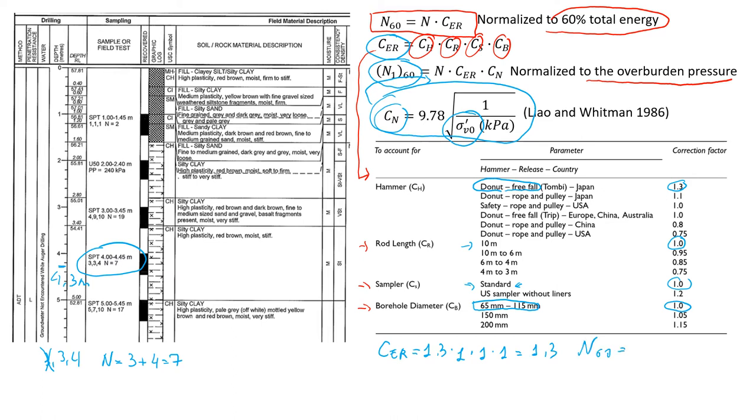And now we'll find N60. So it will be the number of blows, which is seven, times the coefficient correction for energy, 1.3. It will give us approximately 9.1.